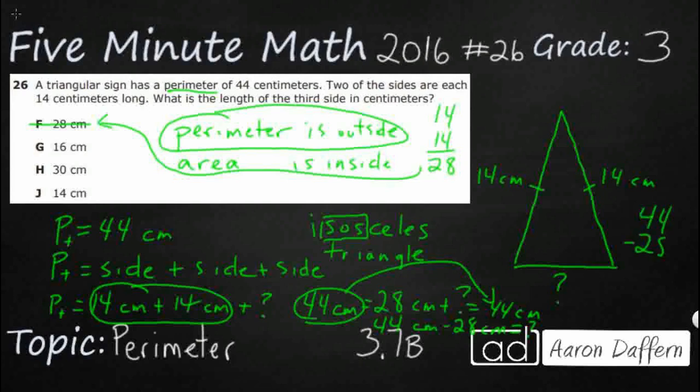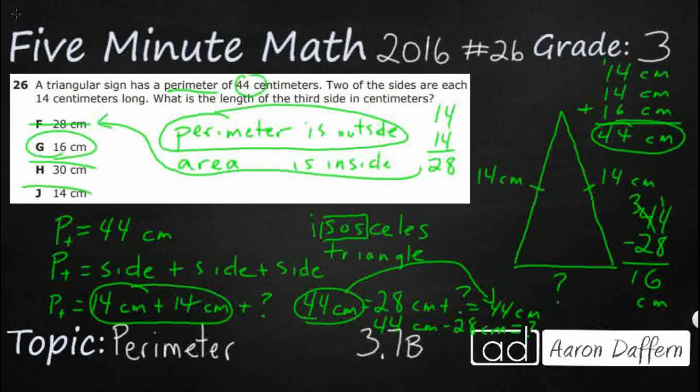So it looks like our answer is going to be 16 cm. Just double checking here, we add it all up and it does make 44 cm, which is what the perimeter was. So our answer is going to be G, 16 cm.